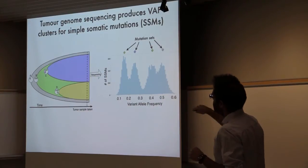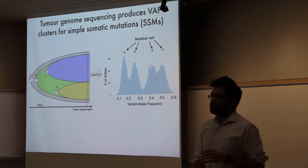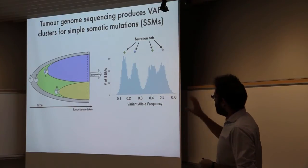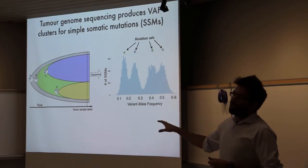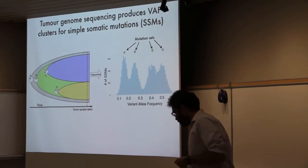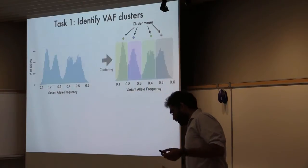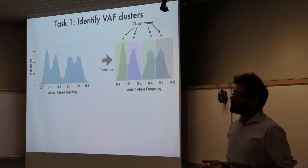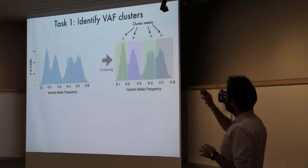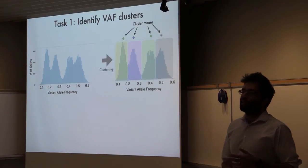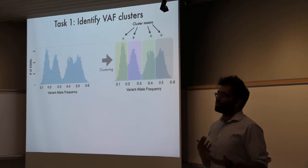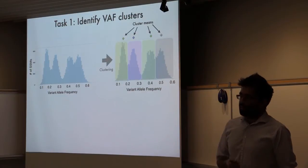On the x-axis is the variant allele frequency and the y-axis is the number of mutations. Now we have this histogram — how can we reconstruct the genotypes? There are two tasks. The first task is to identify the VAF clusters. Here we identify four VAF clusters, and for each cluster we identify the central or main VAF associated with that cluster.